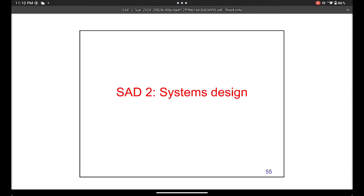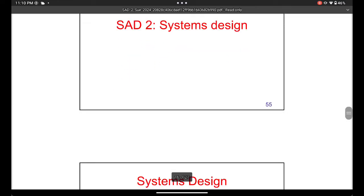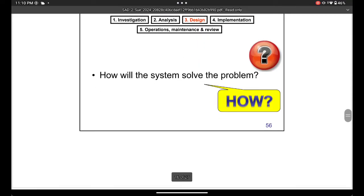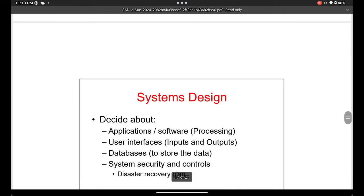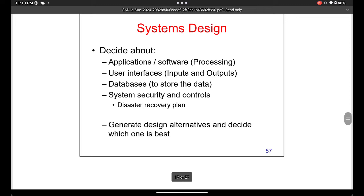Now you know what the system needs, so in the design step you actually make the system. The design stage is about how the system will solve the problem. You need to decide what software to use, what application to use, what user interfaces to use — for example, a menu interface or a graphical interface — and what databases to use. You are literally building the whole system.